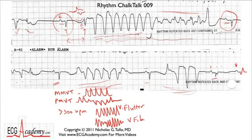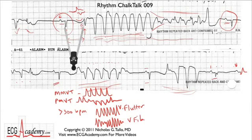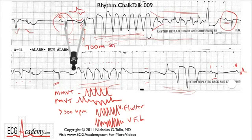Looking at this run, it seems monomorphic at first, but then clearly the morphology changes — the beats become much smaller. This is where you should have pulled out your calipers. The QT interval of this sinus beat measures out to be a whopping 700 milliseconds. Oh my goodness — a 700-millisecond QT interval. You better not go back to sleep; something bad is happening here.